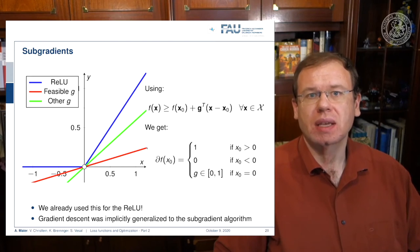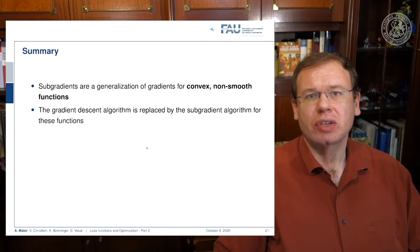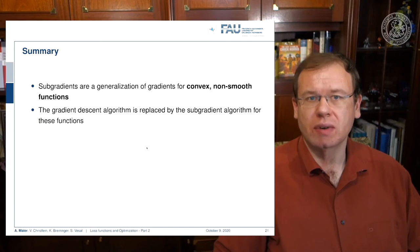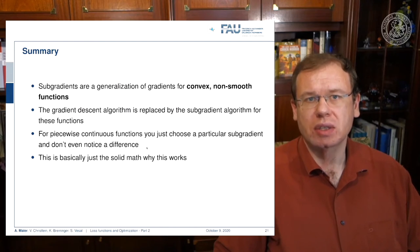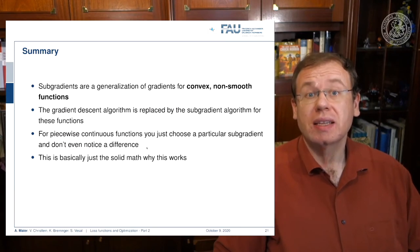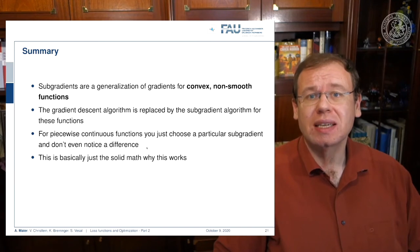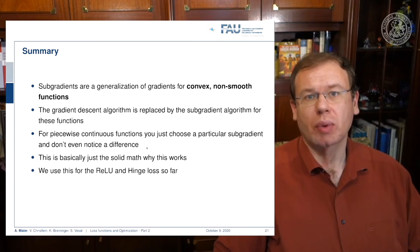So we can now say, well, the functions that we are looking at are locally convex. This then allows us to find the local minima even with ReLUs and with the hinge loss. So let's summarize a bit: subgradients are a generalization of gradients for non-smooth functions. The gradient descent algorithm is replaced by the respective subgradient algorithm for these functions. Still, this allows us to continue essentially how we did before. For piecewise continuous functions, you just choose a particular subgradient and you probably don't even notice the difference. The nice thing is that we are not just doing this as an engineering solution, but there is actually a solid mathematical theory that this actually works.